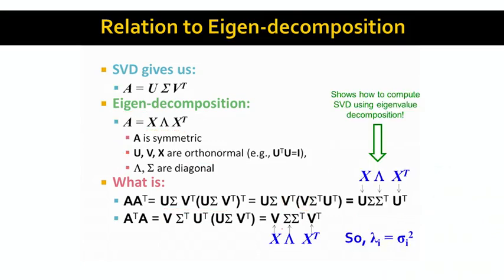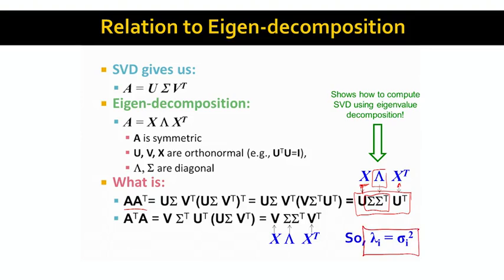Since sigma is a diagonal matrix, sigma times sigma transpose is another diagonal matrix containing the squares of the singular values. So if we take A times A transpose, which is a symmetric matrix, and do its SVD, we find that U is the set of eigenvectors and sigma times sigma transpose is the set of eigenvalues. This means we can do the eigenvalue decomposition from the SVD, where the relationship is that the singular values squared are the eigenvalues of the corresponding matrix. That is the connection between eigenvalue and singular value decomposition.